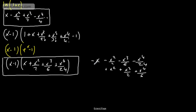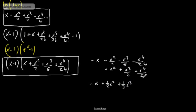Collecting all of this up: we get minus x, then plus one half x squared. For the x cubed terms: 3 sixths minus 1 sixth gives us 2 sixths, so plus one third x cubed. Then for x to the fourth: 4 twenty-fourths minus 1 twenty-fourth gives 3 twenty-fourths, which is plus 1 over 8 x to the fourth.